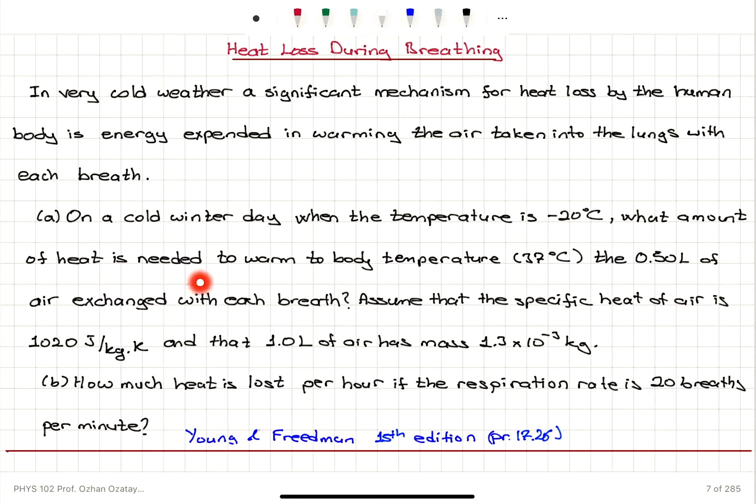On a cold winter day when the temperature is minus 20 degrees Celsius, what amount of heat is needed to warm to body temperature, 37 degrees Celsius, the 0.5 liters of air exchanged with each breath? Assume that the specific heat of air is 1020 joules per kilogram Kelvin and that 1 liter of air has mass 1.3 times 10 to minus 3 kilograms. How much heat is lost per hour if the respiration rate is 20 breaths per minute?